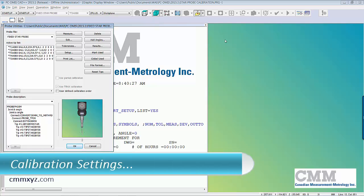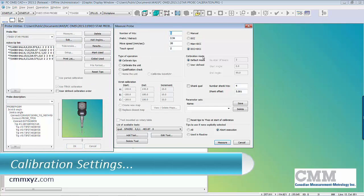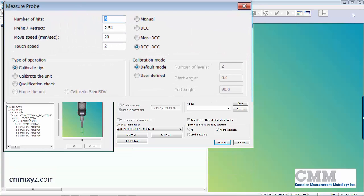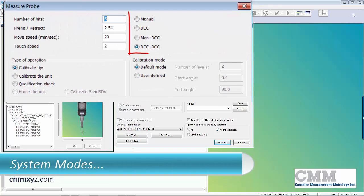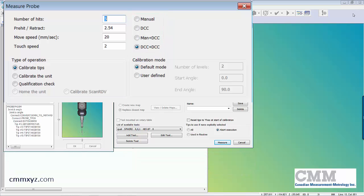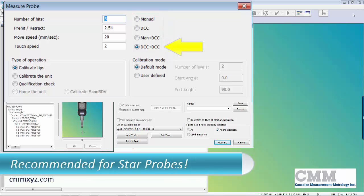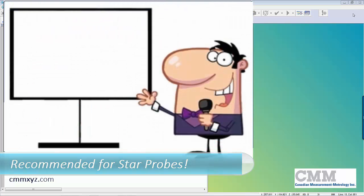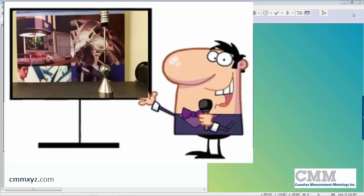Let's just go into our calibration settings. There's a few things I need to explain here. The first thing I want to explain is what's called the system mode. That's this area here where you see manual DCC, manual plus DCC, and DCC plus DCC. The setting I recommend is DCC plus DCC. What that will do is enable sample hits prior to the probe calibration routine.